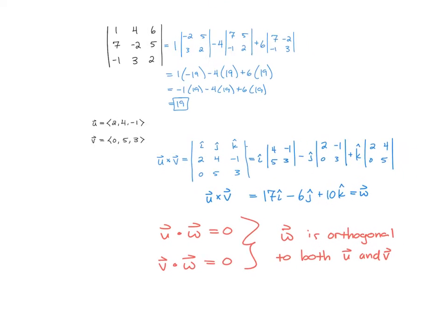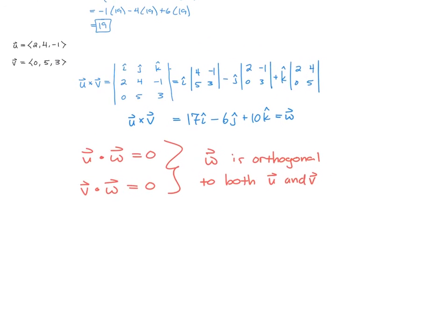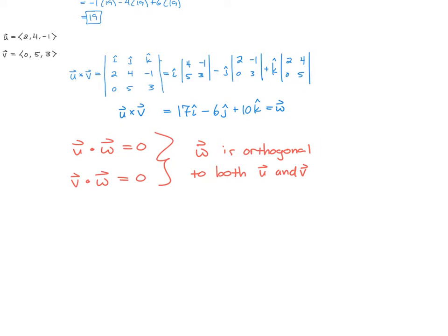So then the last bit to talk about is how do you know which direction it's going to go. Because if you have u like this and v like that, so I'm trying to draw three-dimensionally here, your cross product could be going up, and that would be perpendicular to both.